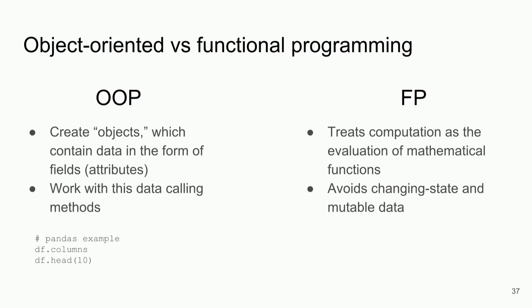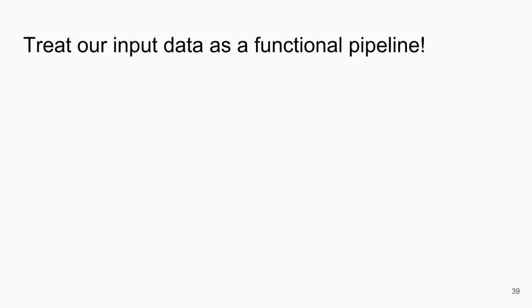Functional programming treats computation as the evaluation of mathematical functions. When data is in this functional world, it avoids changing states and is no longer mutable. Think about a function like add1 — it takes a number and adds one to it. The number's data type is not going to change throughout the function; it's just defining the way data flows through.